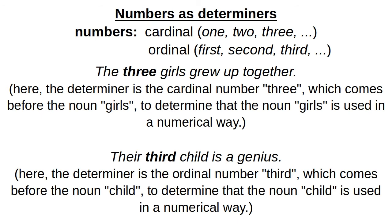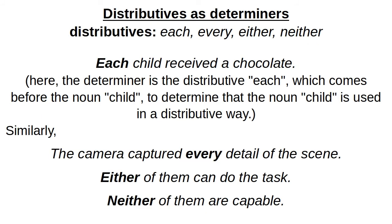We can also use numbers as determiners. There are two kinds: cardinal numbers (1, 2, 3) and ordinal numbers (1st, 2nd, 3rd, 4th). For example, 'the three girls grew up together' — here '3' is the determiner, a cardinal number, coming before the plural noun 'girls.' 'Their third child is a genius' — here the determiner is the ordinal number 'third,' and 'child' is the noun, used in a numerical way.